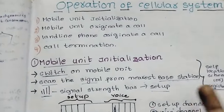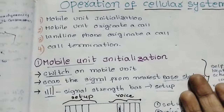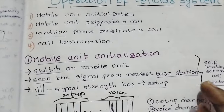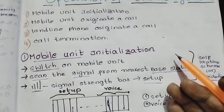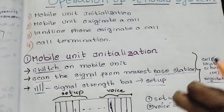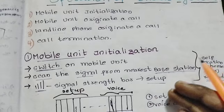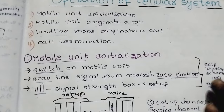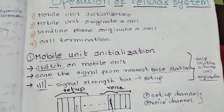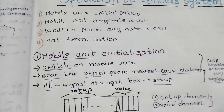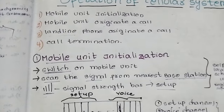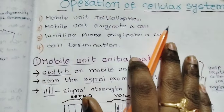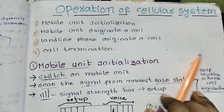We are going to operate a cellular system. For example, we are going to call a mobile unit. The call can originate or terminate, similar to the landline — we are going to discuss this in this video.